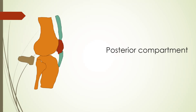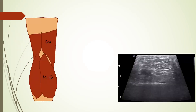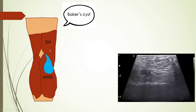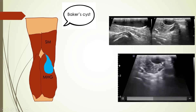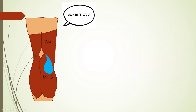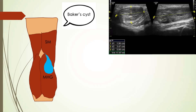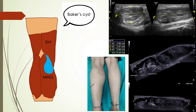Moving to the posterior compartment, one of the most common pathologies around the knee joint is Baker's cyst, which is distension of the bursa between the tendons of semimembranosus and the medial head of gastrocnemius. It gives a sign known as the speech bubble sign, which we can see here between the tendons of semimembranosus and the medial head of gastrocnemius. Baker's cyst can be echo-free or filled with synovial thickening, as in this case of rheumatoid arthritis where exuberant synovial thickening and large pannus is distending the Baker's cyst.